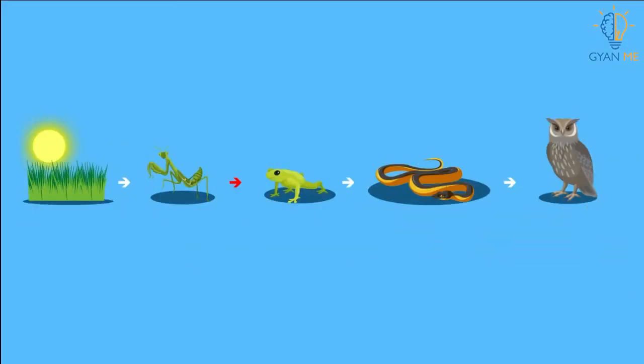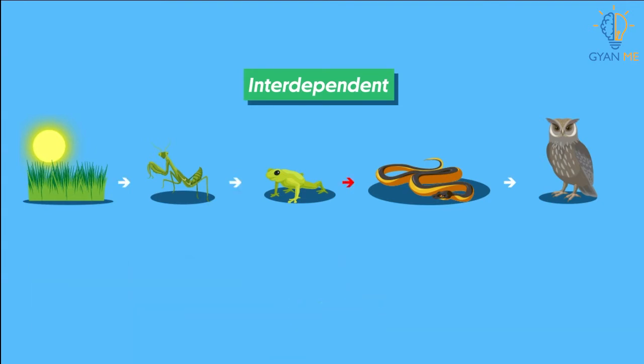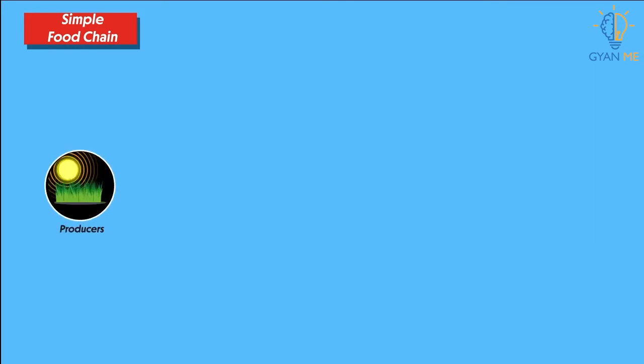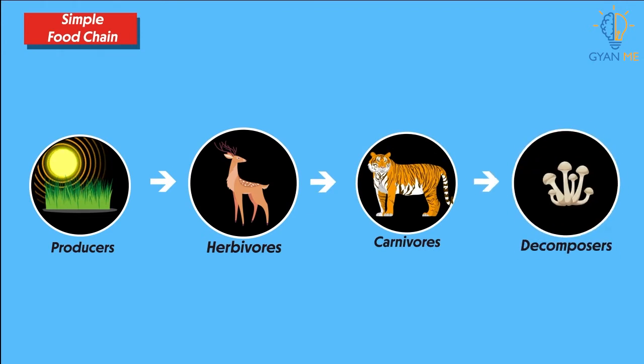So as you can observe, this forms a series of organisms feeding on one another, interdependent on one another for their food. This series of organisms taking part at various levels forms a continuous linear structure which we call a food chain. We can say that a simple food chain basically consists of links between producers, herbivores, carnivores, and decomposers.